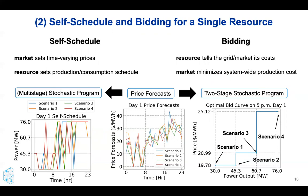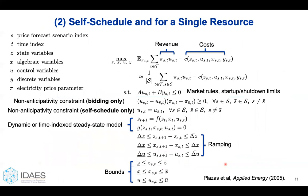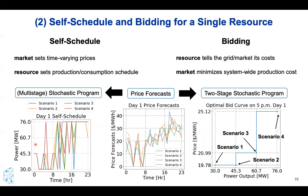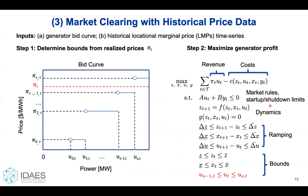Each time-series price forecast corresponds to a scenario, and you get one bid curve per time step or per hour. The optimization goal is to maximize the expected value of revenue minus costs, approximated with scenarios, subject to market rules, integer decisions, start-up and shutdown constraints, ramping, and bounds. I want to point out non-anticipativity: for self-scheduling, the first few hours of control actions across all scenarios must be the same. For bidding, non-anticipativity enforces that the bid curve is increasing.